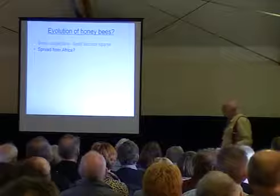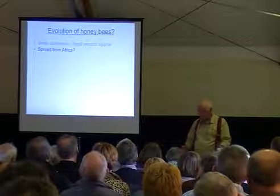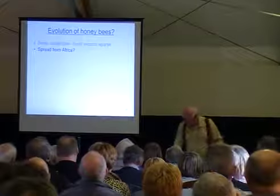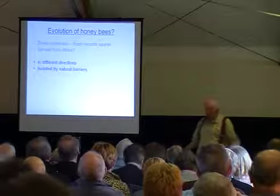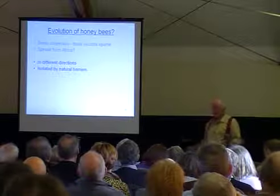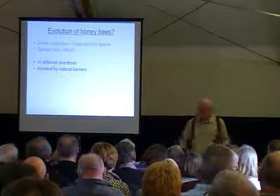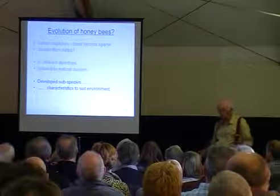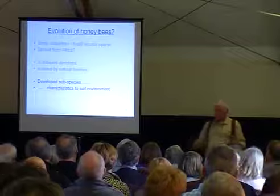It seems that bees spread from Africa in some way. How they got there we're not quite sure - whether they started there or moved from the Near East, which now seems to be the main suggestion. They then spread in different directions as expanding species would, becoming isolated by natural barriers - perhaps mountains, sand, water, ice or whatever. And there they diverged into subspecies, their characteristics diverging to suit the environment they found themselves in.